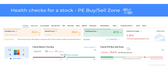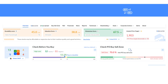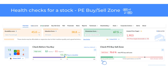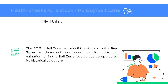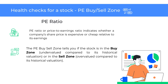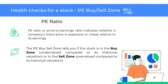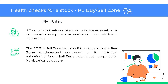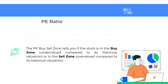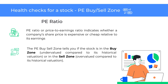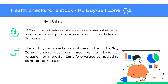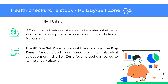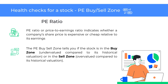The third health check is the PE buy or sell zone. This is a valuation check based on the past valuation history of the stock. It shows if a stock's PE is undervalued or overvalued compared to the historical range it typically trades in. The PE ratio, or price-to-earnings ratio, indicates whether a company's share price is expensive or cheap relative to its earnings. The PE buy or sell zone tells you if the stock is in the buy zone — undervalued compared to its historical valuation — or in the sell zone, overvalued compared to its historical valuation.